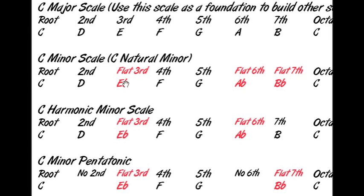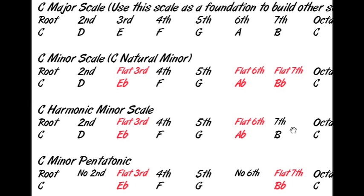For a minor scale, in red here, I'm showing you what notes you're actually altering from that major scale. So to get a C minor, also called a C natural minor, you're flatting your third — so you'll have an E flat there — you're going to flat your sixth, an A flat, and you'll flat your seventh. But for a C harmonic minor, you flat your third and your sixth, but you leave the seventh major, just like it was in the major scale — you leave that a major seventh.